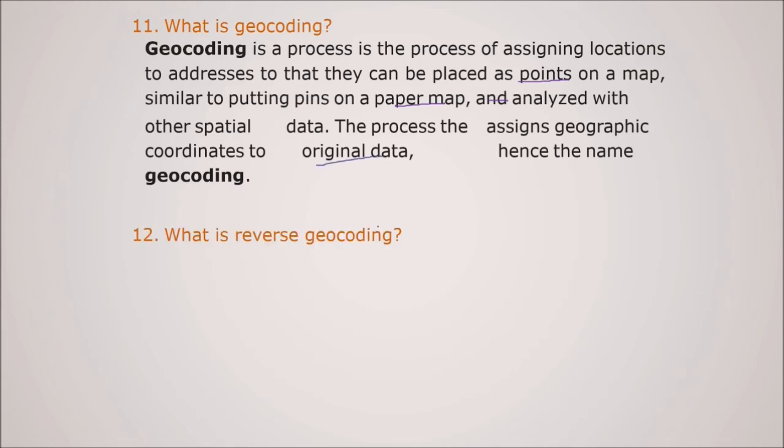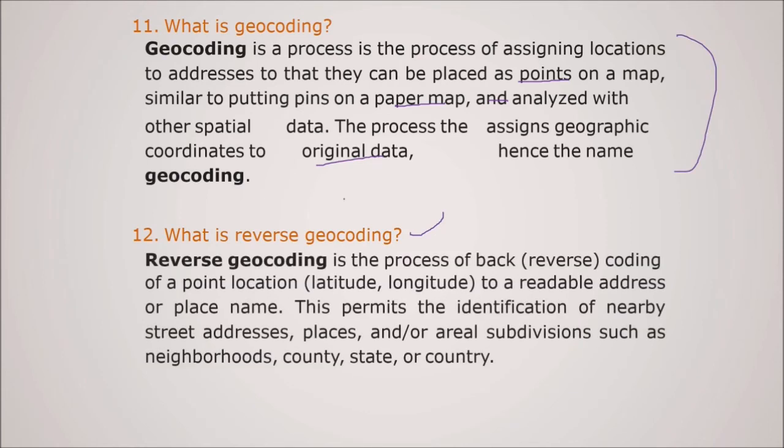What is reverse geocoding? The reverse of geocoding. Reverse geocoding is the process of back or reverse coding of a point of location that is longitude to a readable address or a place name. So this permits the identification of nearby street address, places or area subdivisions such as neighborhood, county, state or country.